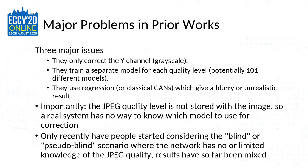There are some major problems with the current state of prior work — three major issues. They generally only correct the Y channel, so that's grayscale images. They train a separate model for each quality level — potentially 101 different models, since JPEG quality is a number from 0 to 100 inclusive. And they focus on regression or a classical GAN, which can give a blurry or unrealistic result.